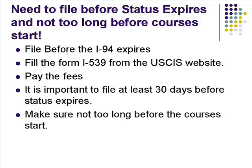Now you come here and you want to change status to F1 visa. So how do you do that? First of all, you have to file form I-539, which you can get on the USCIS website. Pay the fee. It's important to file at least 30 days before your status expires. But don't file too long before the course starts, because you might have an issue under the I-20.